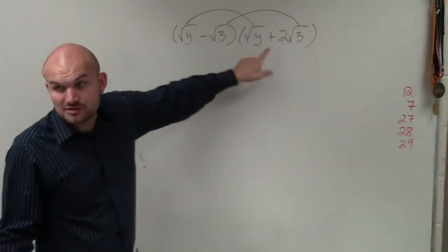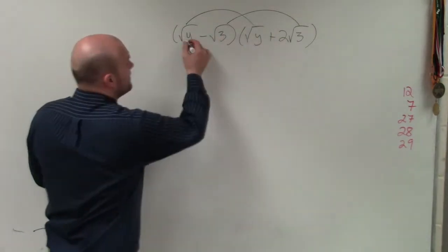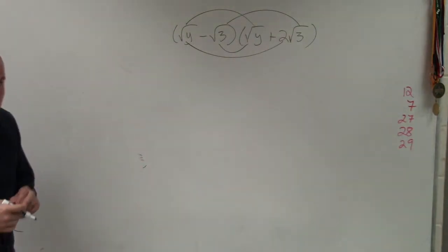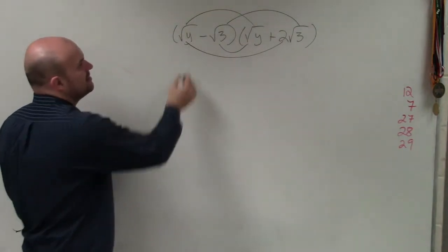When applying FOIL, you have to multiply the first terms, the last terms, the outer, and the inner, right? It kind of becomes a little bit of a process, but let's go through it step by step.